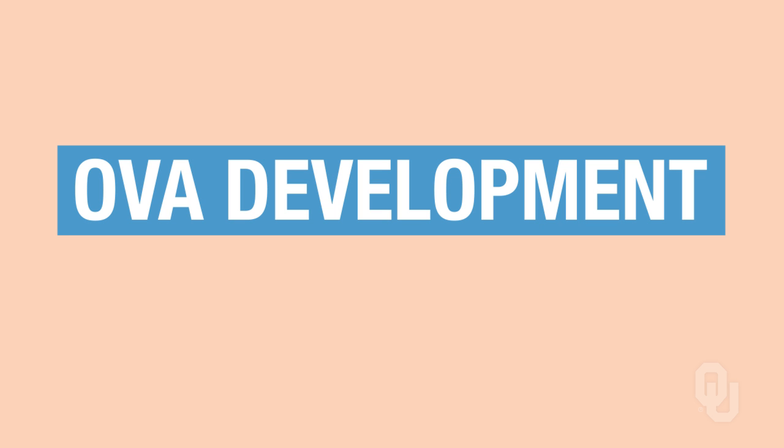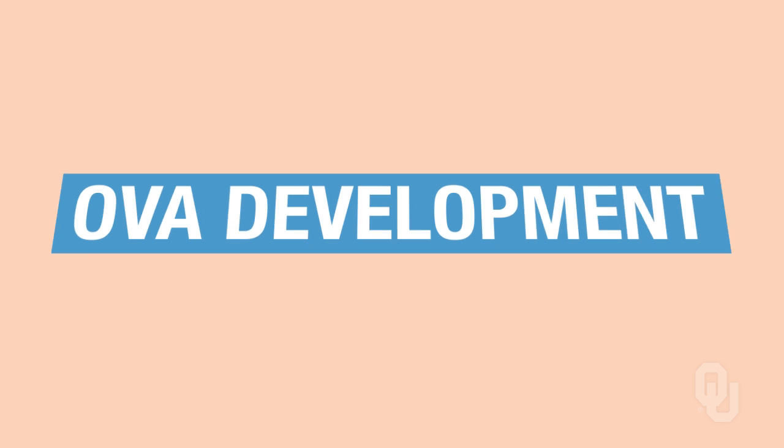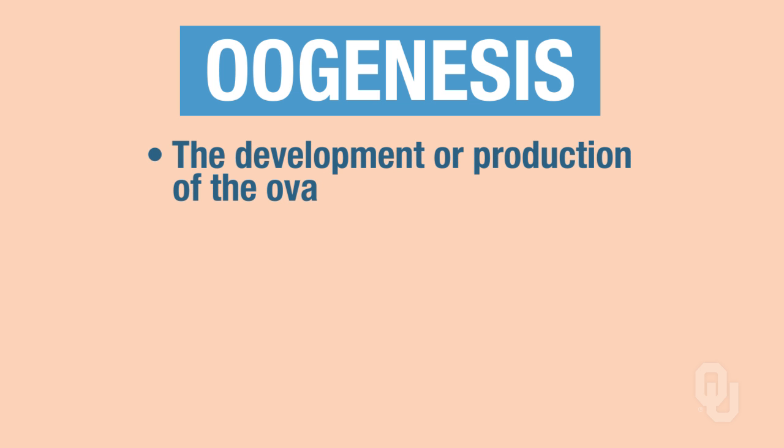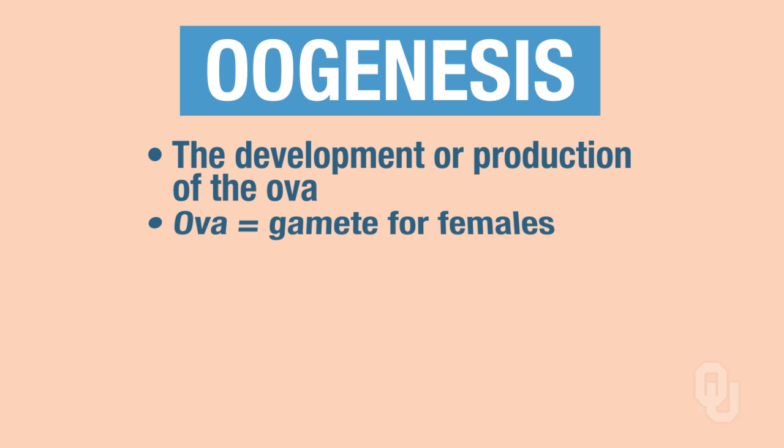In this segment of the Female Reproductive System, we're going to be discussing the ova and its development. When we talk about egg development, we're really talking about oogenesis. Oogenesis is the development or the production of the ova, which is the gamete for females.